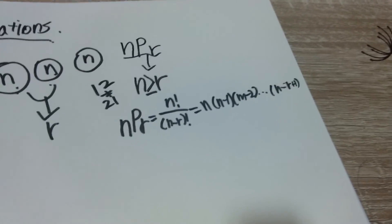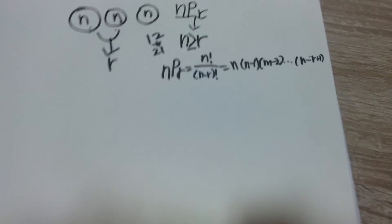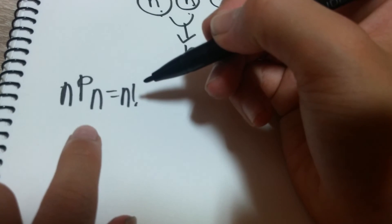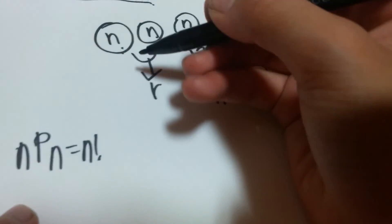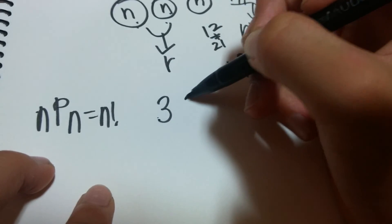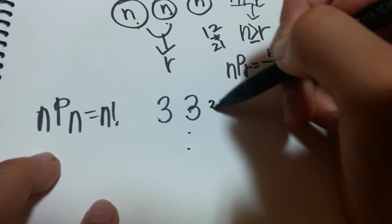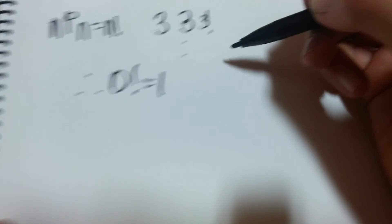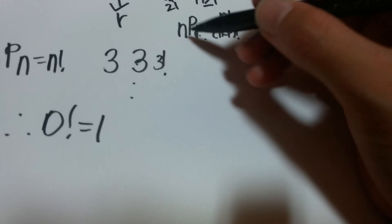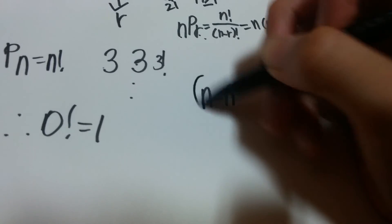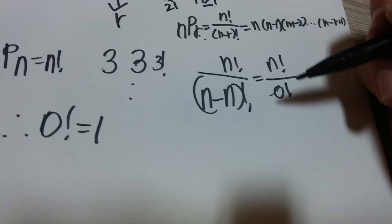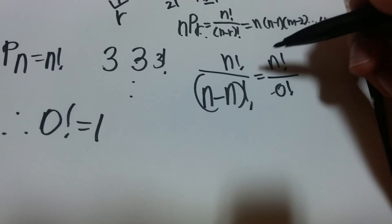Here's a little clue for why nPn makes sense. If you have N objects and pick all N with order, that's N factorial. When R equals N, the formula gives N! / (N-N)! = N! / 0!, so 0! must equal 1 for this to work.